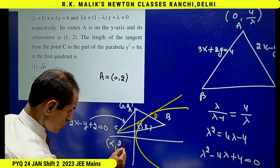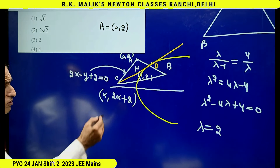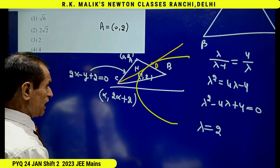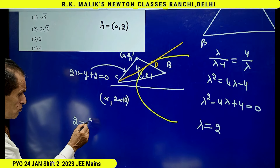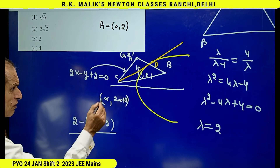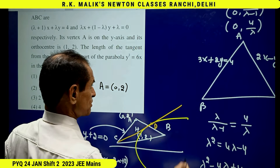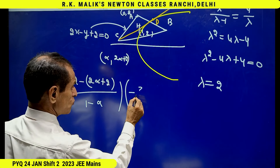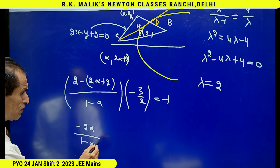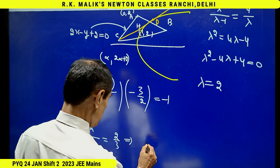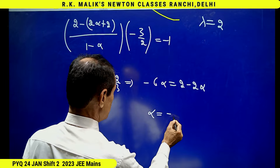Suppose point C has x-coordinate alpha, so its y-coordinate is 2 alpha plus 2. Naming the orthocenter as H, since CH is an altitude, CH is perpendicular to AB, so slope of CH times slope of AB equals minus 1. Slope of CH equals (2 minus (2 alpha plus 2)) upon (1 minus alpha), and slope of AB is minus 3 by 2. This gives minus 2 alpha upon (1 minus alpha) times (minus 3 by 2) equals minus 1, so minus 6 alpha equals 2 minus 2 alpha, giving alpha equals minus 1 by 2.